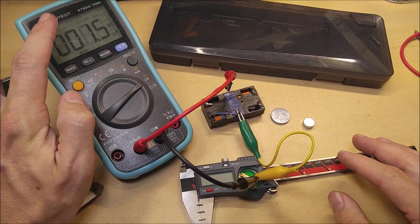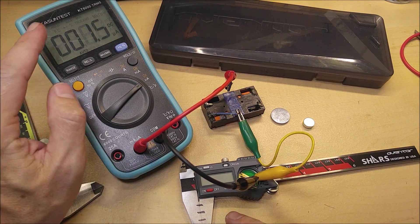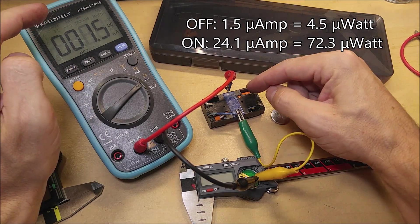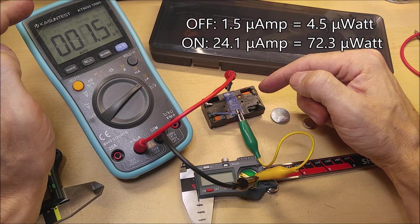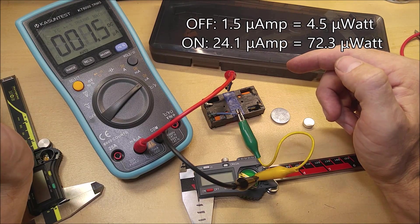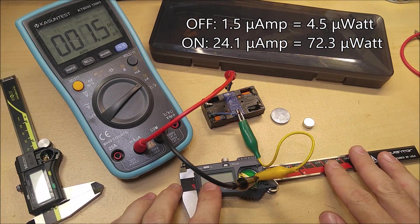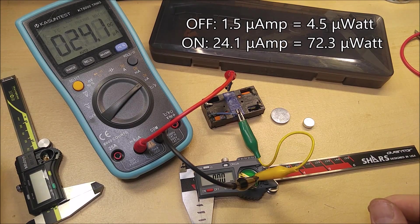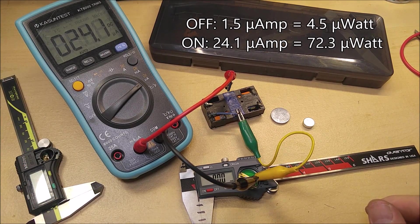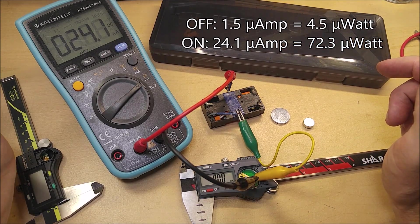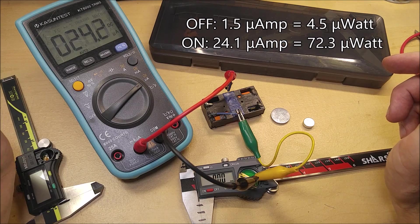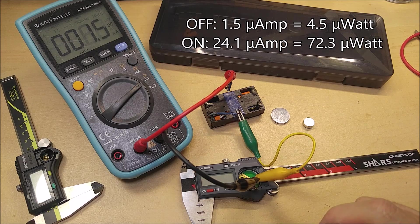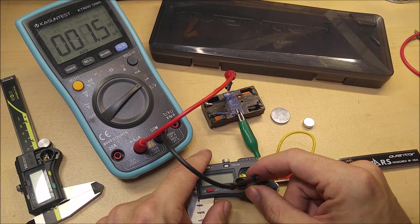So in the off state, this Shars Edventor DPS is only drawing 1.5 microamps, not milliamps, microamps. That's very respectable. If we multiply that by the three volts of the battery, we're only getting about 4.5 micro watts of draw. With the caliper on though, we're getting 24.1 microamps. That is substantially more than the Mitutoyo as I'll show you here in a minute. We multiply that by the three volts of the battery, we're getting about 75 micro watts of power draw with the caliper on. But the fact that it's only drawing 1.5 while it's off is very respectful.